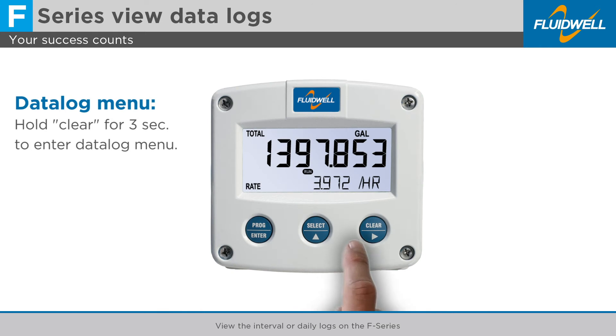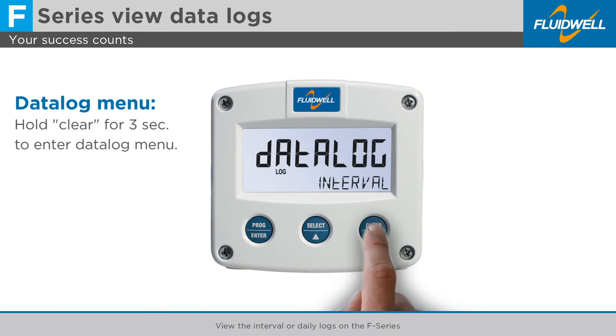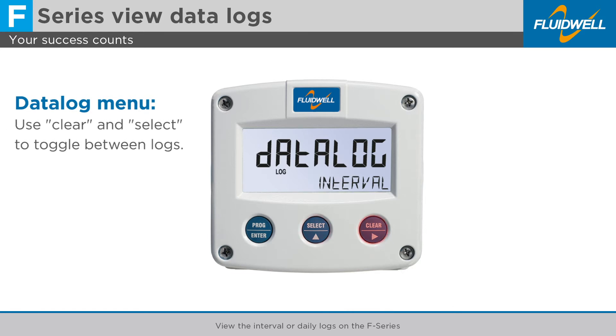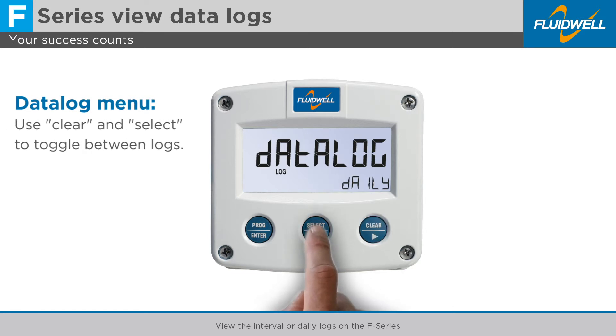Hold the clear button for 3 seconds. The data log menu appears. Use clear and select to toggle between interval, daily, or events logs.